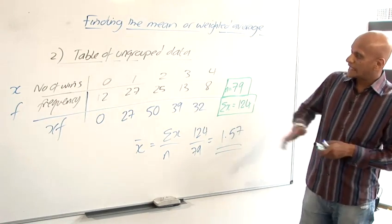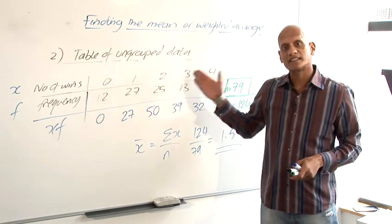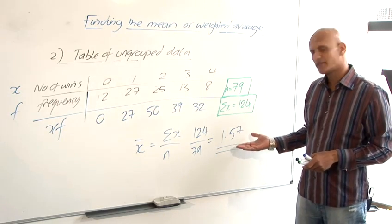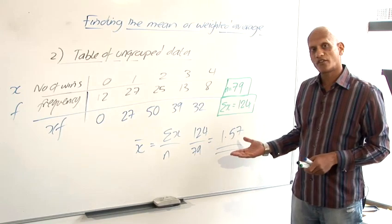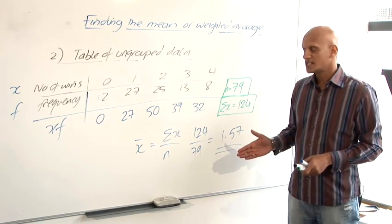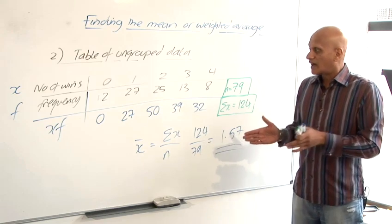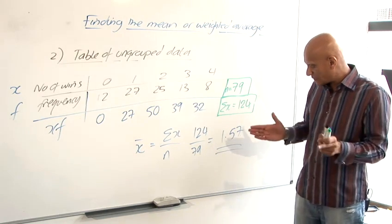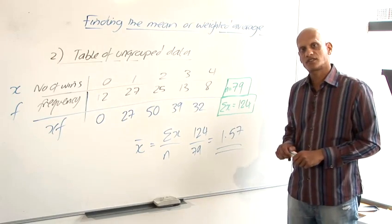The mean for a set of data, even if the data is discrete like this, the number of wins, the mean doesn't have to be a whole number, it can be 1.57. It's useful to know that the mean isn't 1, and it isn't 2, it's 1.57. So that means we know that a lot of people got 1 win, and a lot of people got 2 wins, but the average wasn't exactly in between them, it was slightly closer to 2 than it was to 1.